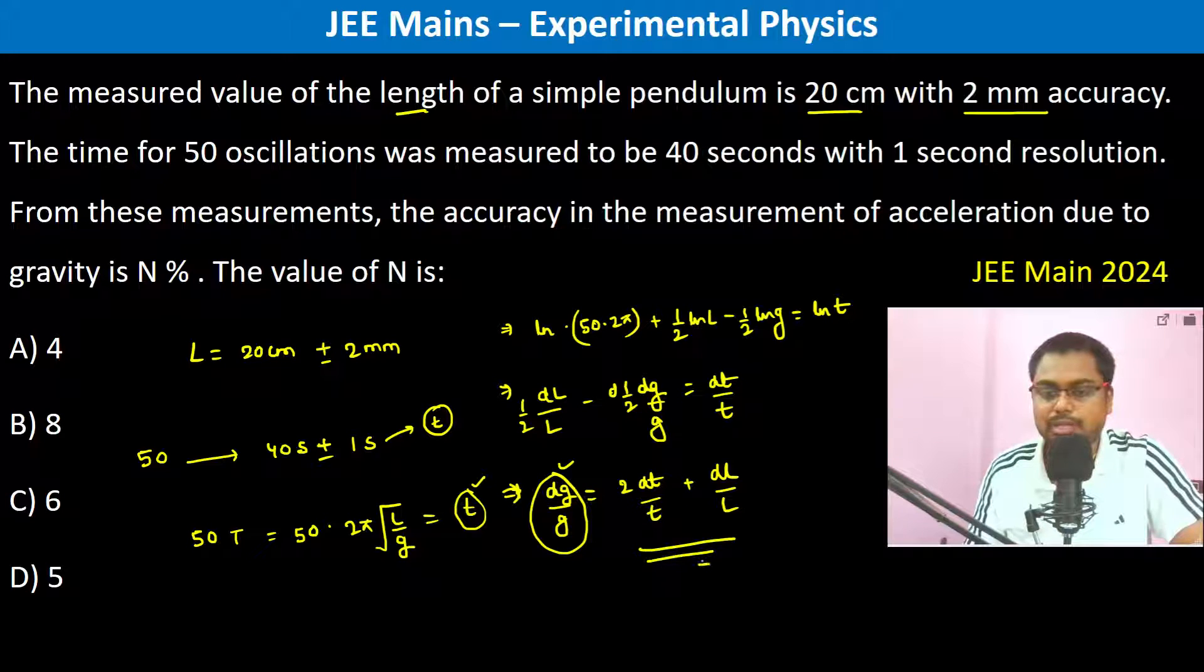Therefore 2 into d t by t, 1 by 40, plus d l, 2 millimeter, that is 2 into 10 to the power minus 3 by 20 into 10 to the power minus 2. We are writing in percentage, so it has to be multiplied by 100.